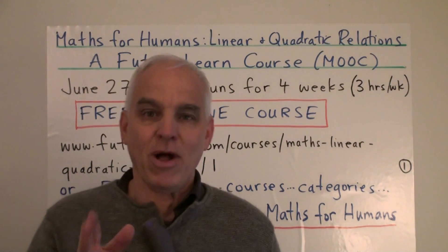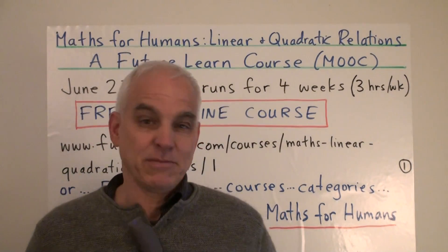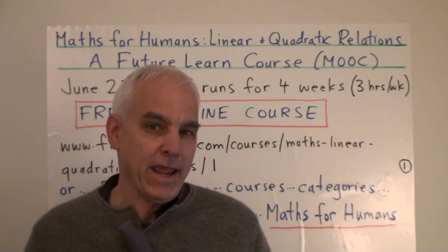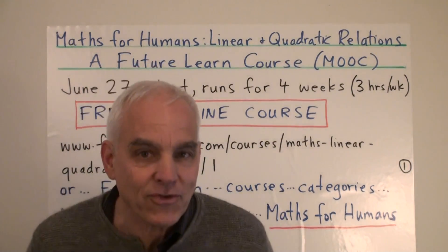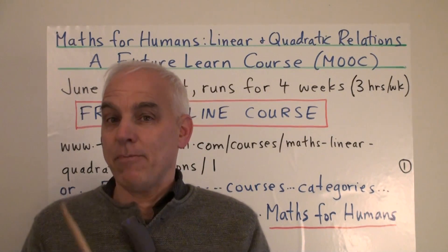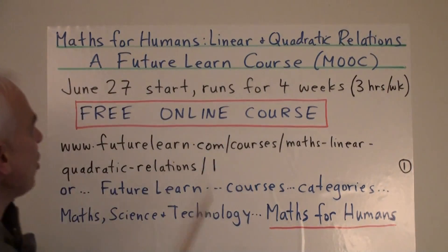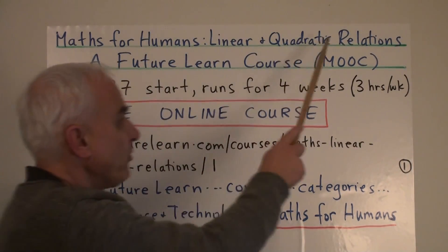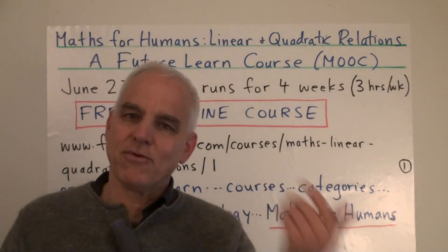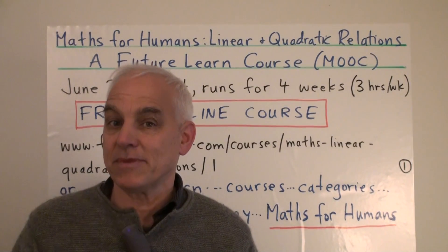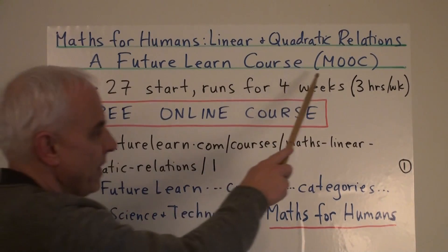Hello everybody, I'm Norman Weilberger and I'd like to interrupt our usual program with this special announcement. It's an announcement for an online mathematics course that's starting soon, just in a couple of days. The course is called Maths for Humans: Linear and Quadratic Relations, and it's a kind of rerun of something we ran last year.